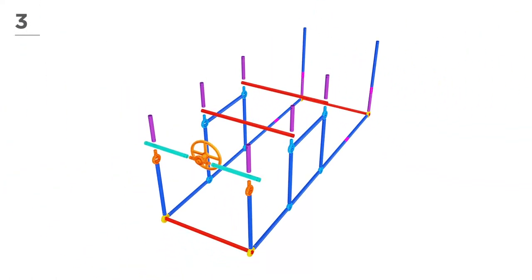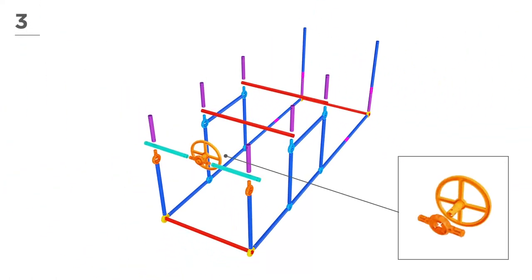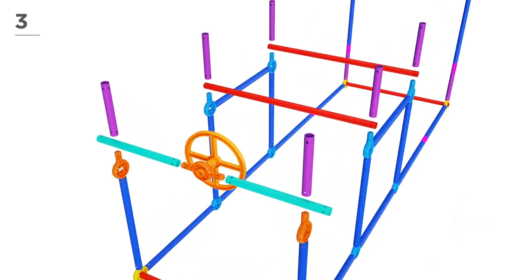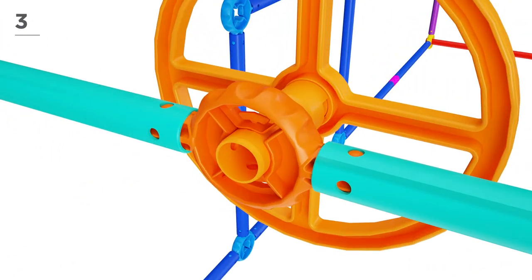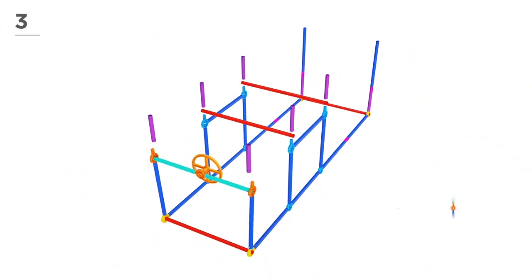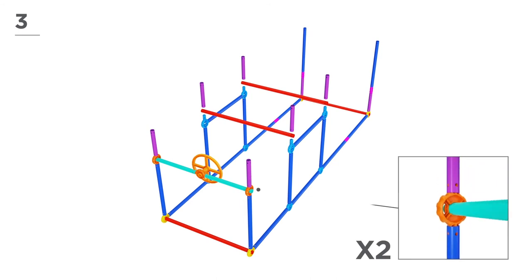For the center area, use 2 teal poles, 2 red poles, 6 magenta poles, 1 orange connector, and 1 steering wheel. Then, fit the parts together as shown here.